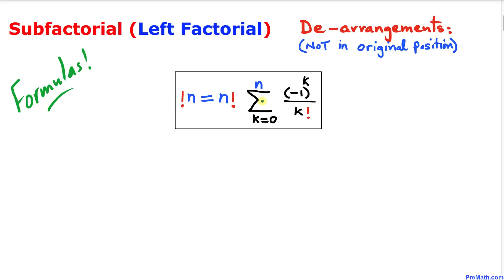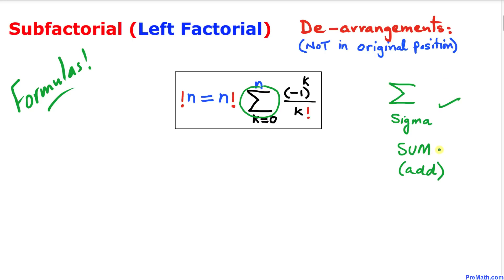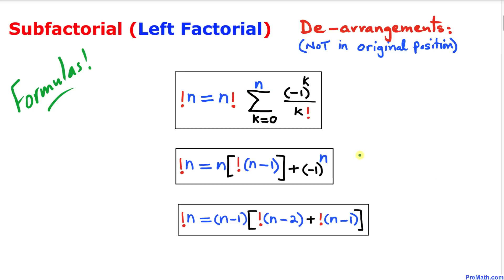Now I'm going to show you the formulas we use to calculate the sub factorial. Here's the crucial formula using sigma notation. Sigma in mathematics means sum, so we need to add the numbers. There are a couple of other formulas that could be used, but I'll be using this one because it's a lot more user-friendly.